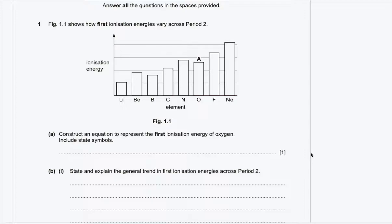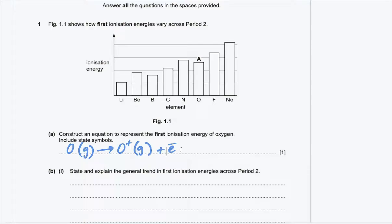Ionization energy is about electron loss. Oxygen, which is originally in the gaseous state, loses an electron and becomes an ion. That is your equation with state symbols.